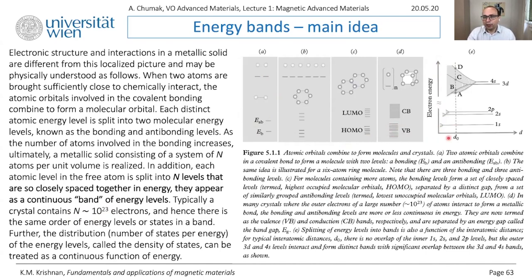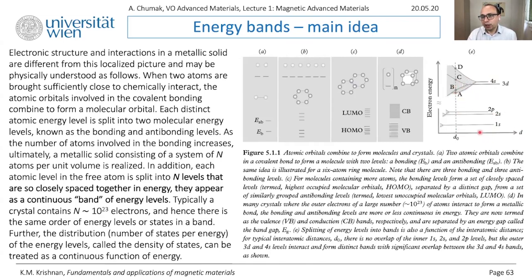Here you can see how bands are formed when you put real atoms with many shells together, where d is the distance between atoms. If the distance is large, these are independent atoms with concrete energy levels. As you move them closer, the 4s electrons — being in the outer shell — start to overlap first, forming a band that gets wider and wider. Then at some point the 3d band also starts to overlap and form a band. Inner shells usually do not form bands because they are localized close to the nucleus and don't overlap.